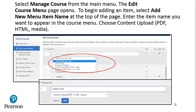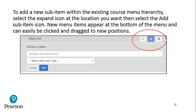Enter the item name you want to appear in the course menu and choose Content Upload, PDF, HTML, or Media. To add a new sub-item within the existing course menu hierarchy, select the Expand icon at the location you want, then select the Add Sub-item icon, the plus sign. New menu items appear at the bottom of the menu and can easily be clicked and dragged to new positions.